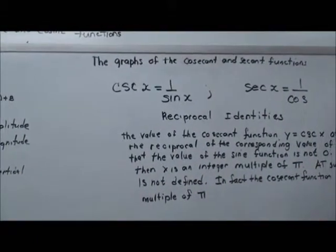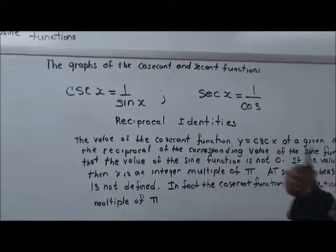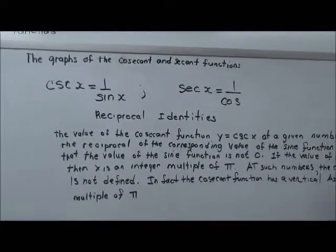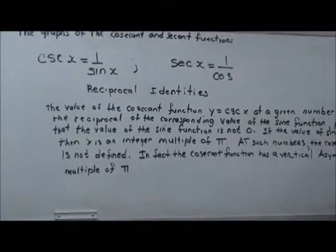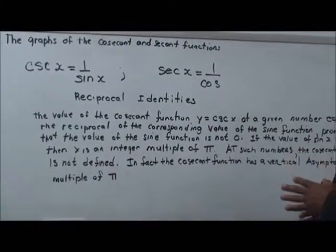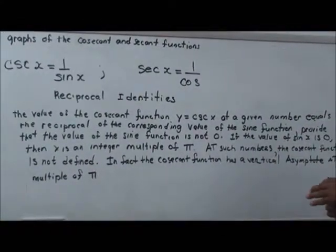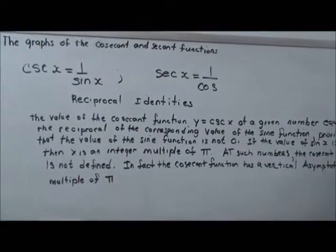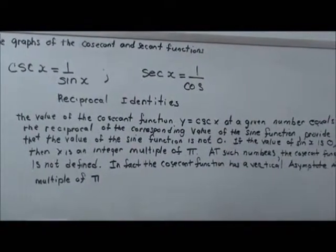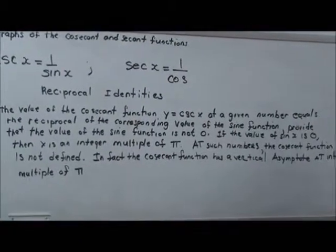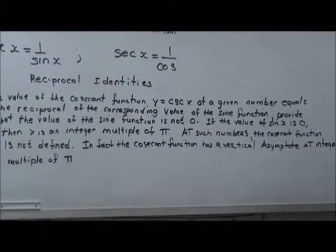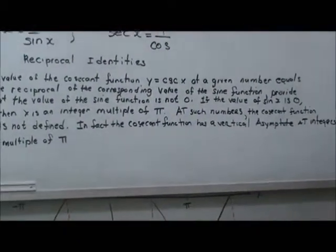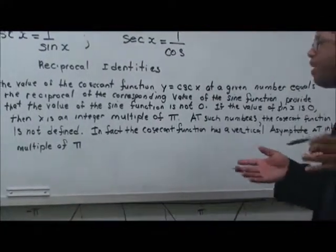equals the reciprocal of the corresponding value of the sine function, provided that the value of the sine function is not 0. But if the value of sine x is 0, then x is an integer multiple of pi. At such numbers, the cosecant function is not defined.